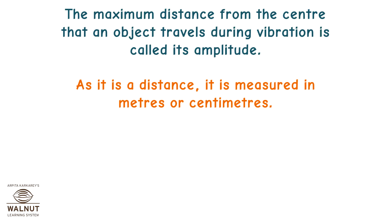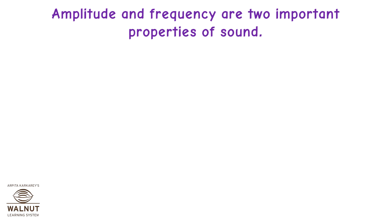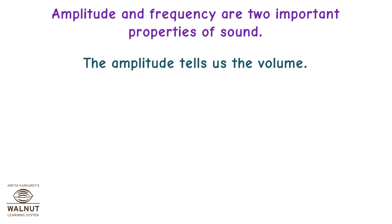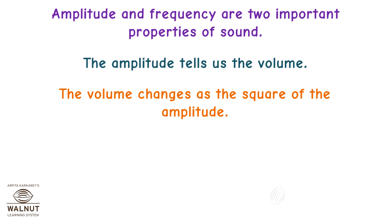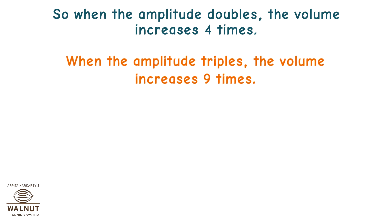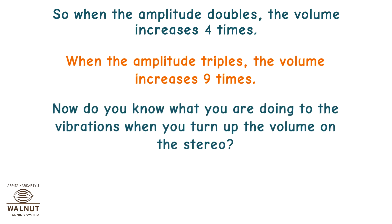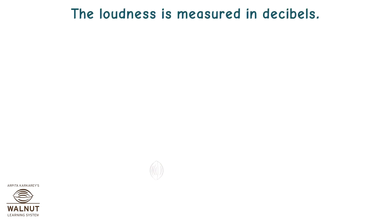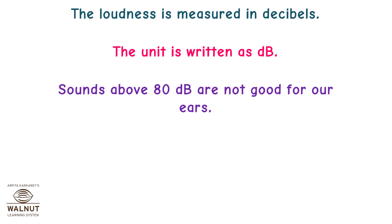The maximum distance from the centre that an object travels during vibration is called its amplitude. As it is a distance, it is measured in metres or centimetres. Amplitude and frequency are two important properties of sound. The amplitude tells us the volume. The volume changes as the square of amplitude — when the amplitude doubles, the volume increases four times; when the amplitude triples, the volume increases nine times. Do you know what you are doing to the vibrations when you turn up the volume on the stereo? The loudness is measured in decibels, written as dB.